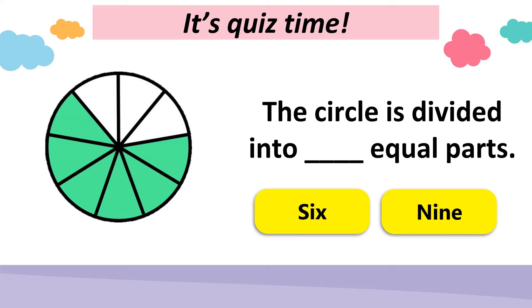It's quiz time. Number three. Look at the circle here. So the circle is divided into how many equal parts? Is it six or nine? Remember, if it's divided into how many equal parts, it's the total number of parts. You can count here. One, two, three, four, five, six, seven, eight, nine. So nine is the answer.